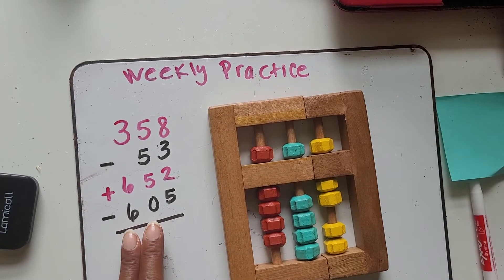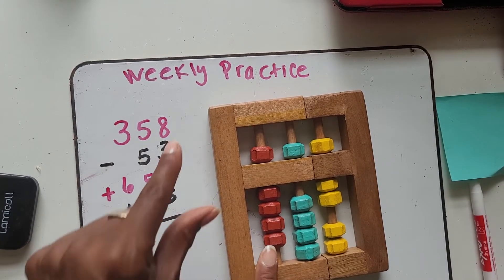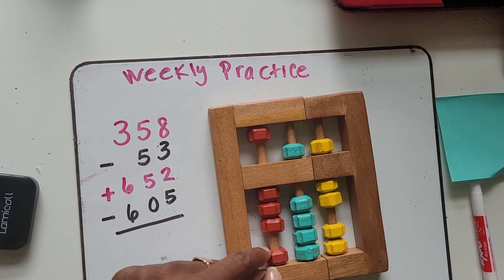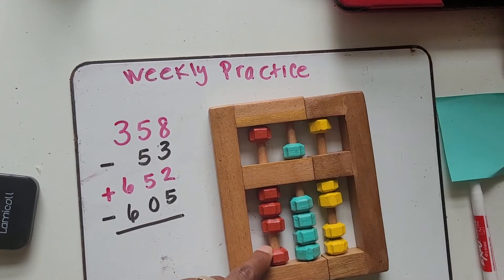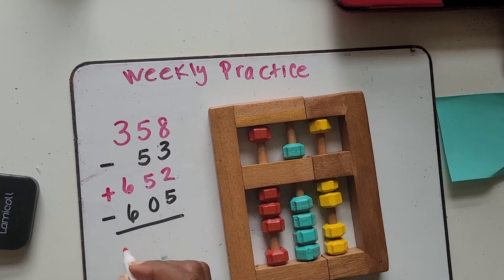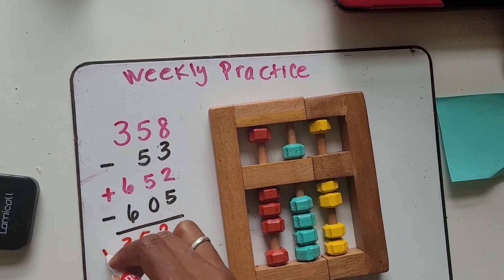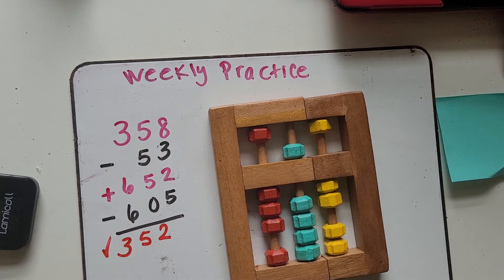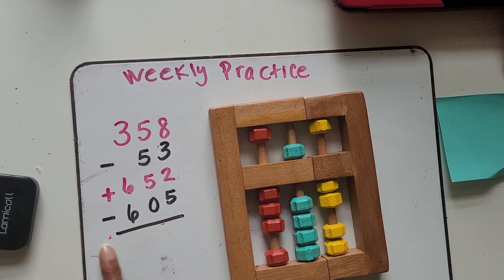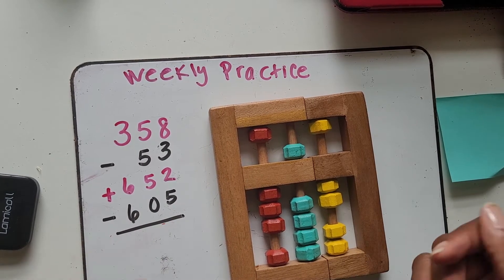Then we're going to take away six hundred and five. So I'll take away six hundred, and I'll take away five ones. So your final answer should have been three hundred, five tens, and two. Check. If you didn't get it correct, that's okay. Just erase the answer and go back, check again, and see what you need to do.